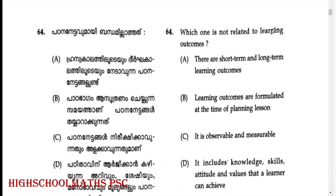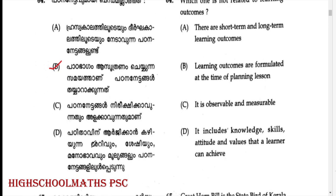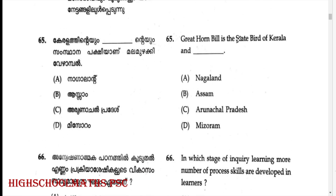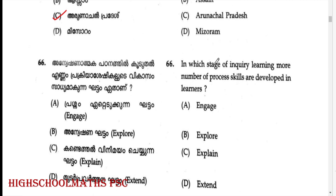Which one is not related to learning outcomes? The answer: Nirikshna. Point B is the main approach of Nirikshna. Option B is the main approach of Nirikshna — an element of inquiry learning.